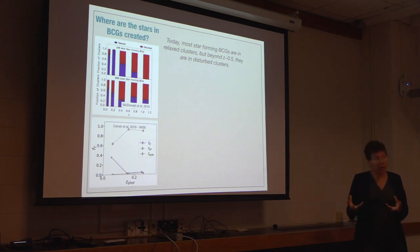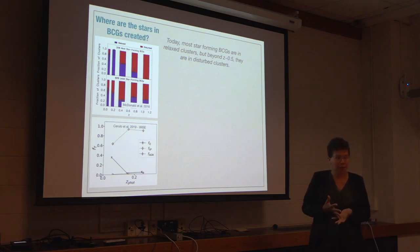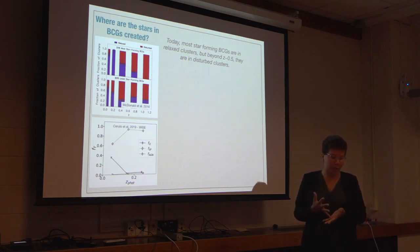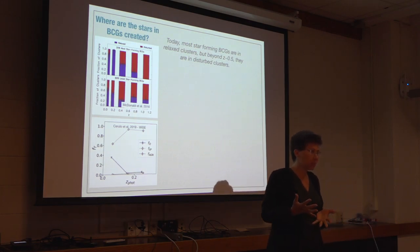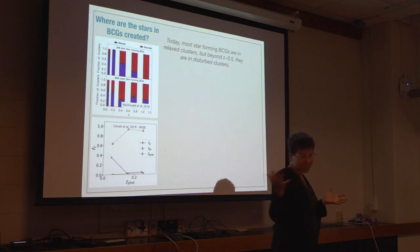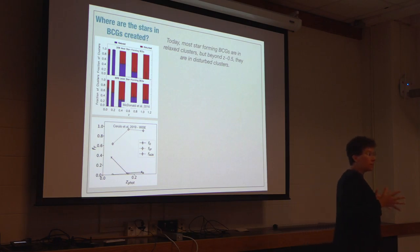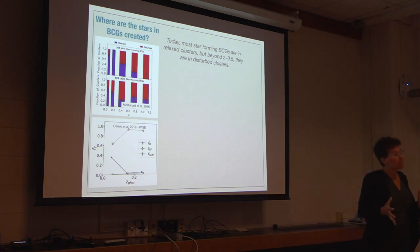What about the stars that make the BCGs? Today, most star-forming BCGs — and there aren't that many, there's not that much recent star formation — but if we take H-alpha to mean star formation, most star-forming BCGs are found in relaxed clusters.